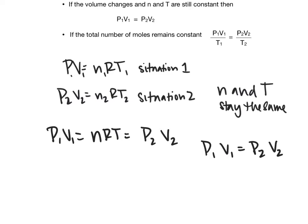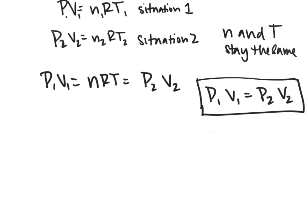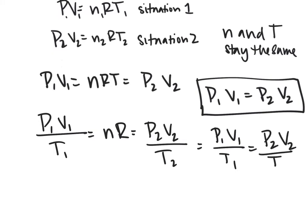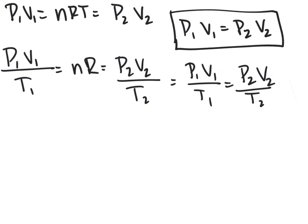If only the moles stay the same, we get P1V1 divided by T1 equals NR equals P2V2 over T2. This gives us the equation P1V1 over T1 equals P2V2 over T2. You could also rewrite this to get P1 over T1 equals P2 over T2.